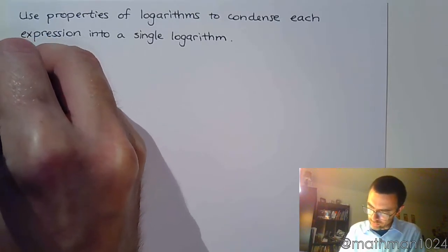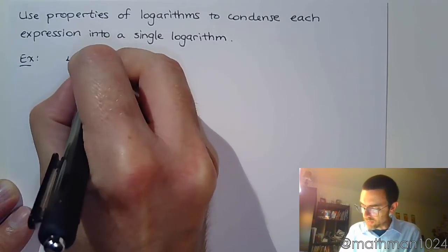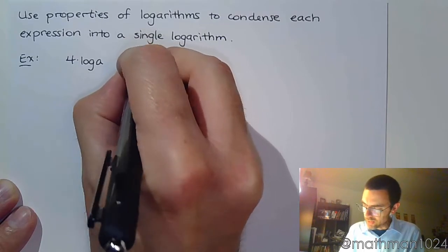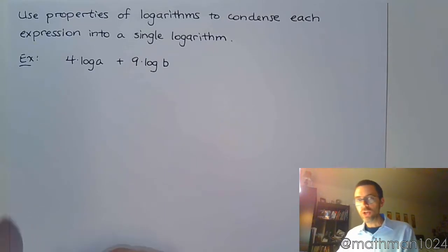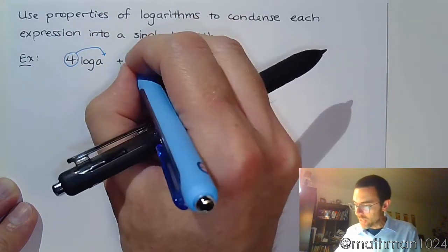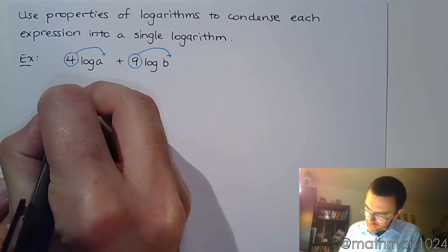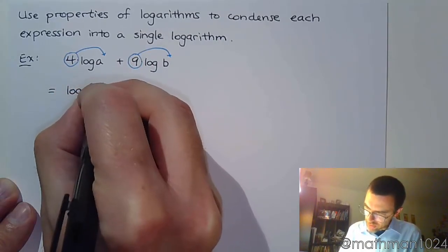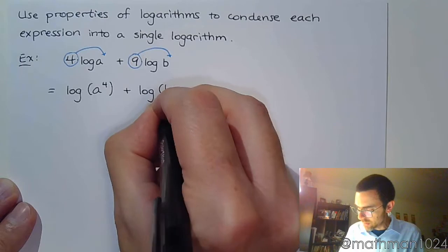So for example, if I take 4 times log of a plus 9 times log of b. We're trying to go backwards, right? So instead of pulling the powers out in front, we're going to put the powers back up where they're supposed to be. So this coefficient will now become the power here, and the same thing for the 9. It becomes the power. So this becomes log of a to the 4th plus log of b to the 9th.